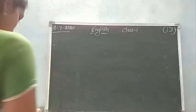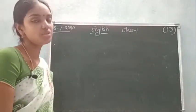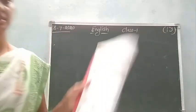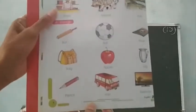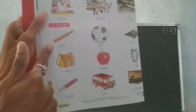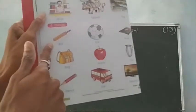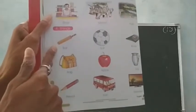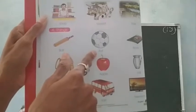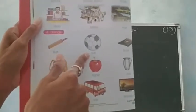Now I am telling you about names of things. First of all I will show you the pictures. All of you see these pictures. What is this first picture? Bat, B-A-T. Ball, B-A-L-L. Next: book, B-O-O-K. Bag, B-A-G. Apple, A-P-P-L-E.